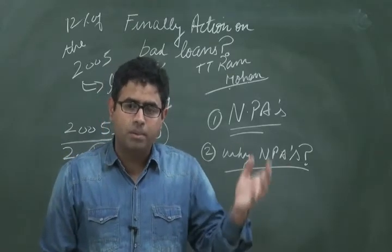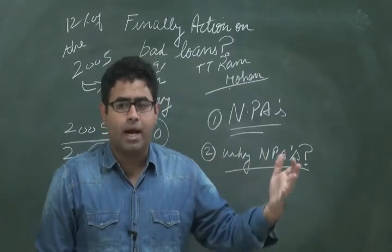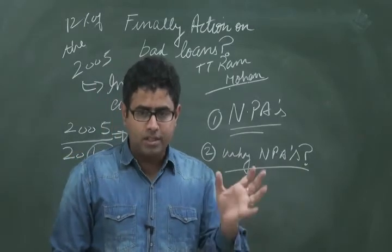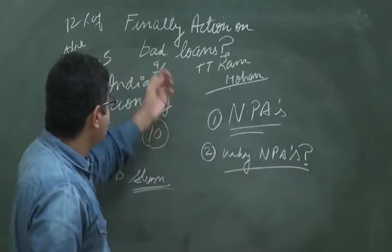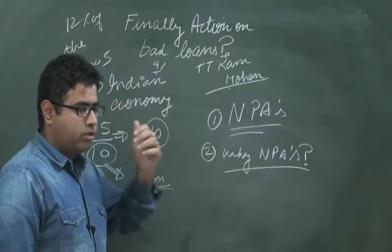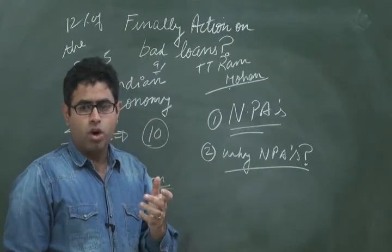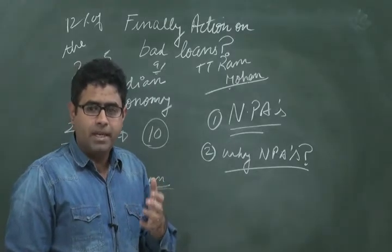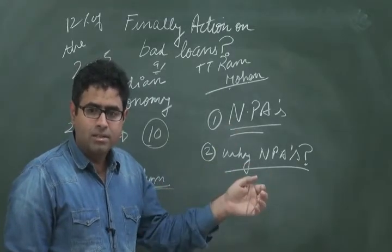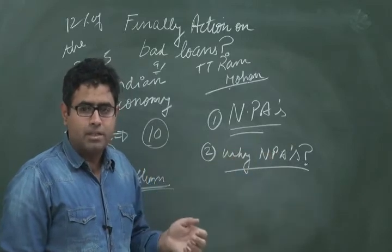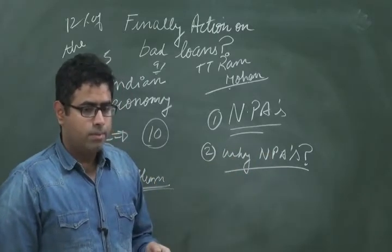Non-performing assets have already been declared because people are not paying back the loans. We have another category known as bad loans. These bad loans are considered to be those loans on which the government believes, or the banks believe, that they will not be getting back these loans.